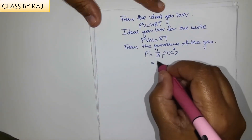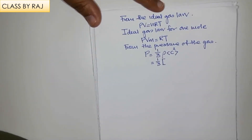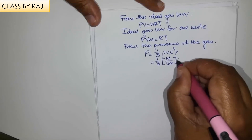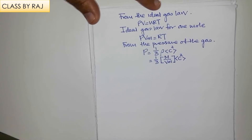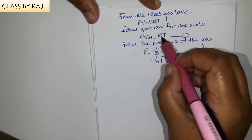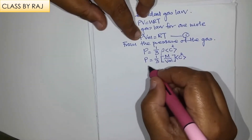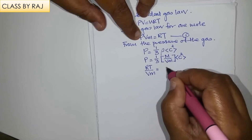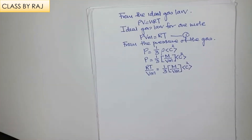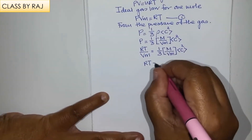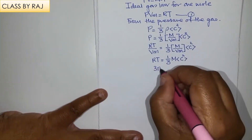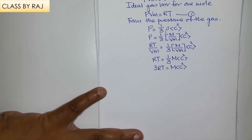We substitute the density ρ = M/Vm into the pressure equation, giving P = (1/3)(M/Vm) times the mean square speed. This is equation 1. Substituting into the ideal gas law gives P × Vm = RT, which equals (1/3)M times the mean square speed. Rearranging, we get RT = (1/3)M × mean square speed, and therefore 3RT = M × mean square speed.